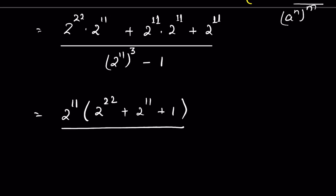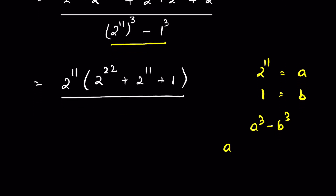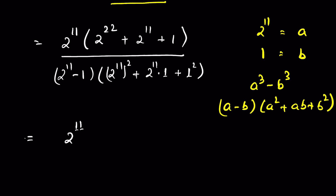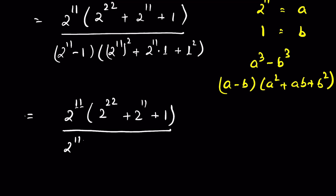Now if we consider 2¹¹ as 'a' and 1 as 'b', the denominator is in the form a³ − b³, since 1 = 1³. We can expand a³ − b³ as (a − b)(a² + ab + b²). So the denominator becomes (2¹¹ − 1) × (2²² + 2¹¹ × 1 + 1²), which is (2¹¹ − 1)(2²² + 2¹¹ + 1).